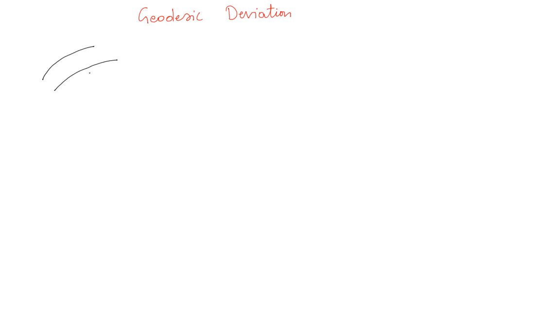In the last lesson we talked about geodesic deviation, where if you have two geodesics and you take two points along these geodesics — this is P, this is P', this is Q, this is Q' — and you parallel transport your tangent vector from P to Q, then Q to Q'.